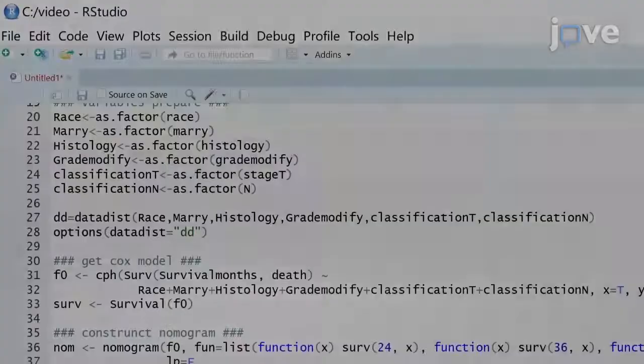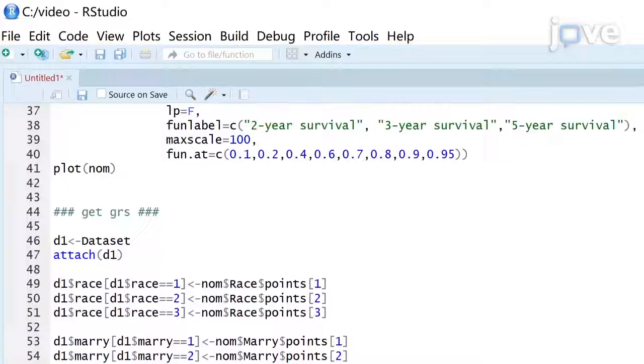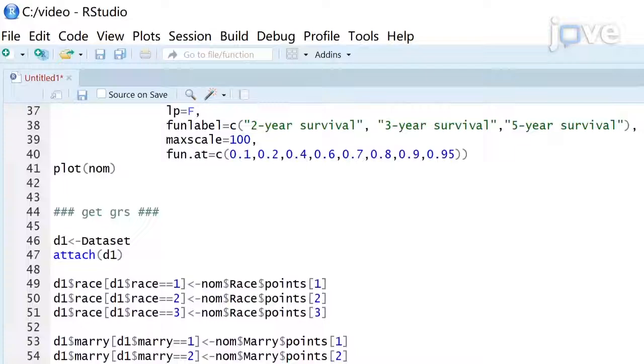Use the meta package in R to calculate the risk score and draw a forest plot. After installing and loading the R packages, obtain the group risk score, or GRS, and divide the cohort into three subgroups.